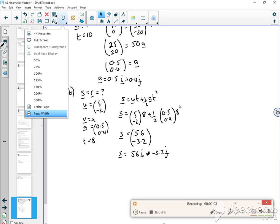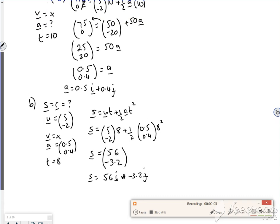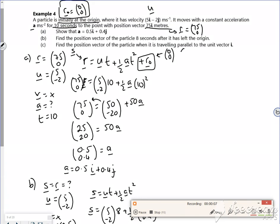Right then, so we're continuing with this one. Let's have a look at part C. So what does part C want us to do? C says find the position vector when it's traveling parallel to the unit vector i.